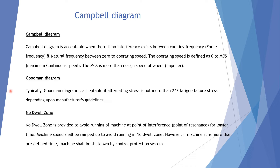Now, the Goodman diagram. Typically, the Goodman diagram is acceptable if the alternating stress is not more than 2/3 of the fatigue failure stress, depending upon the manufacturer's criteria. The no-dual zone is provided to avoid running the machine at the point of interference — that is, the point of resonance — for a longer time. Machine speed shall be ramped up to avoid running in the no-dual zone. However, if the machine runs more than the predefined time, the machine will be shut down by the control protection system.